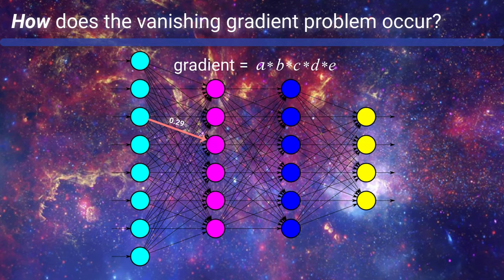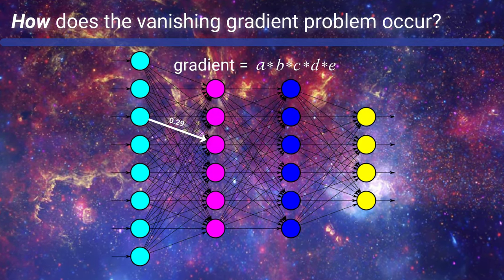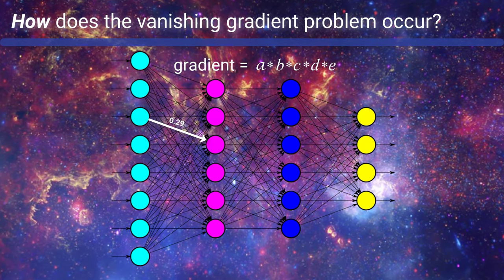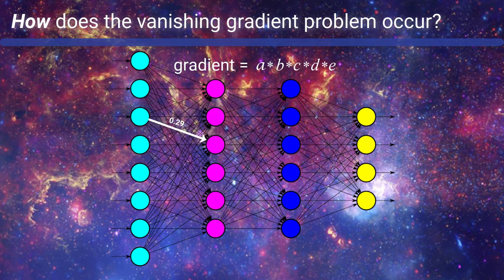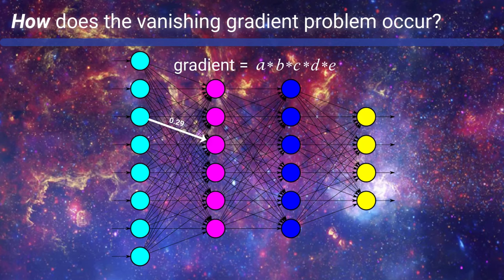...the earlier in the network a weight lives, the more terms will be needed in the product that we just mentioned to get the gradient of the loss with respect to this weight. What happens if the terms in this product, or at least some of them, are small? And by small, we mean less than one small.